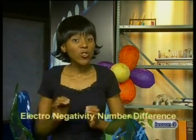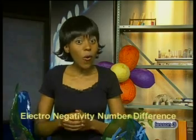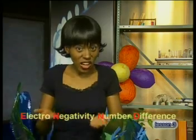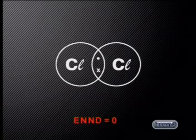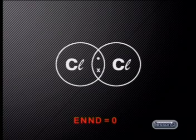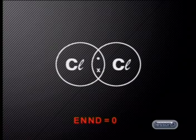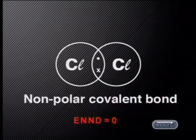Notice that in this case, the difference in electronegativity numbers is zero. The electronegativity number difference, called the ENND, helps us decide how electrons are shared between atoms. Whenever the electronegativity number difference is zero, we can deduce that the electrons in the overlapping orbitals are distributed equally between the atoms. There are no regions within this bond that are more negative or more positive than any other, so the bond is called a nonpolar covalent bond.